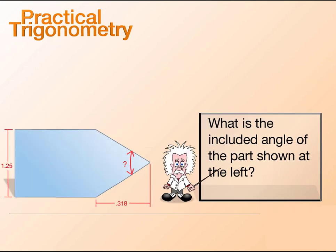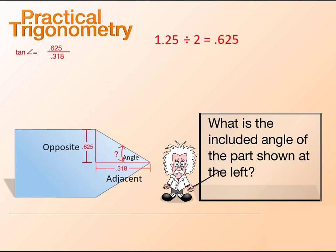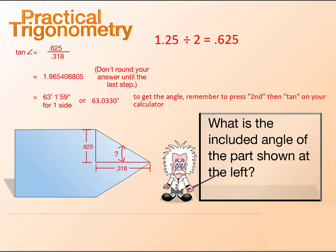What is the included angle of the part shown at the left? Watch as we solve for the missing angle. The full angle is 126 degrees 3 minutes 58 seconds or 126.066 degrees.